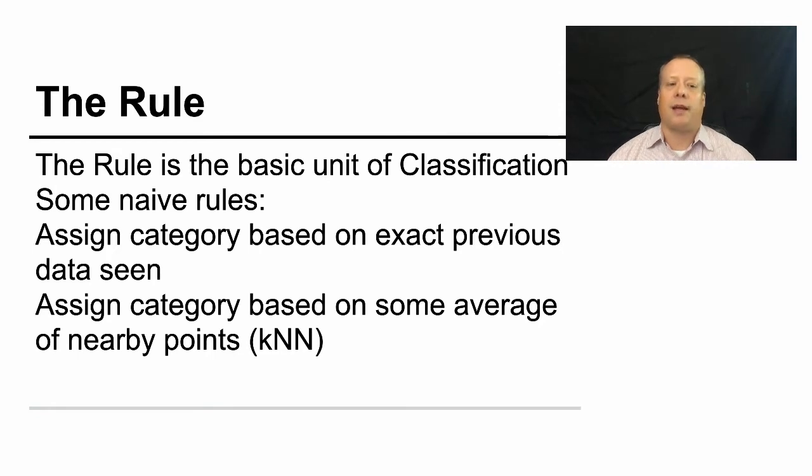But some of the problems with those rules: you can't assign a category based upon the exact previous data seen if you've never seen this particular set of data before. And as we saw before, K nearest neighbors doesn't work very well in a lot of these situations.